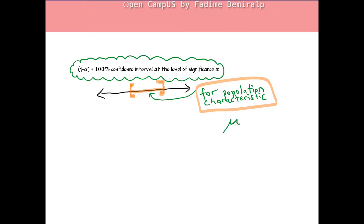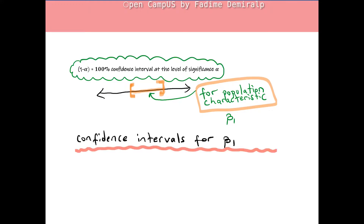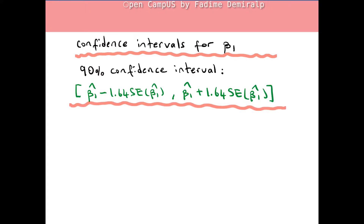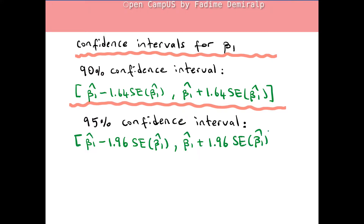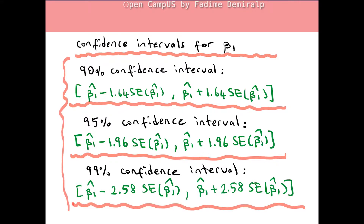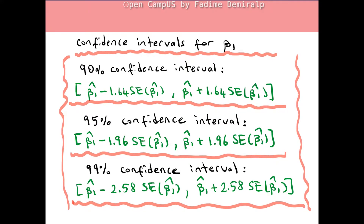In this video, it will be the population slope coefficient beta 1. I will give the confidence intervals for the regression slope coefficient beta 1: the 90% confidence interval, the 95% confidence interval, and the 99% confidence interval. To obtain confidence intervals for beta naught, you can simply replace beta 1 hat with beta naught hat in these intervals.